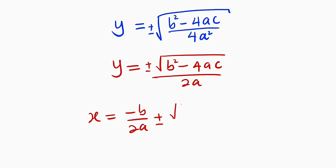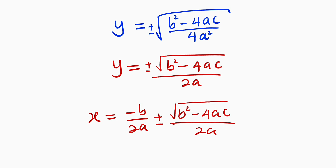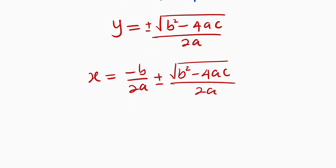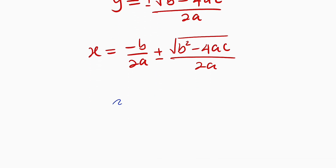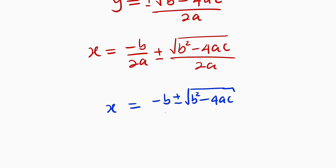So we have plus or minus the square root of b squared minus 4ac divided by 2a. Look at the denominators — they are exactly the same. Therefore, you can take one denominator and add or subtract the numerators. Finally, we obtain x equals negative b plus or minus the square root of b squared minus 4ac, all divided by 2a.